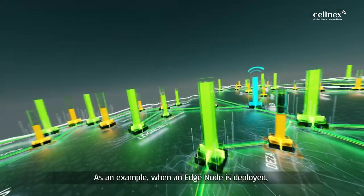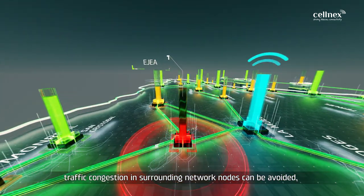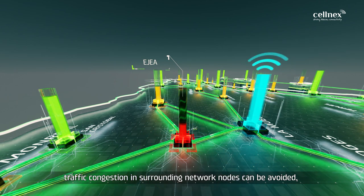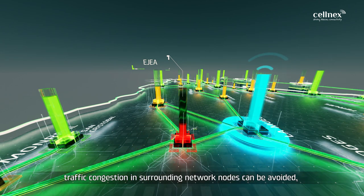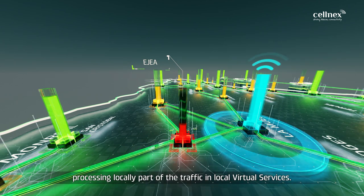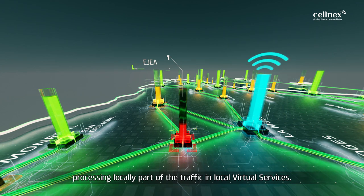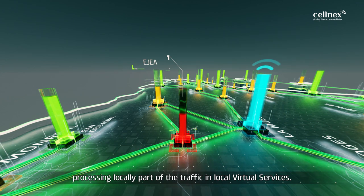As an example, when an Edge node is deployed, traffic congestion and surrounding network nodes can be avoided, processing locally part of the traffic and local virtual services.